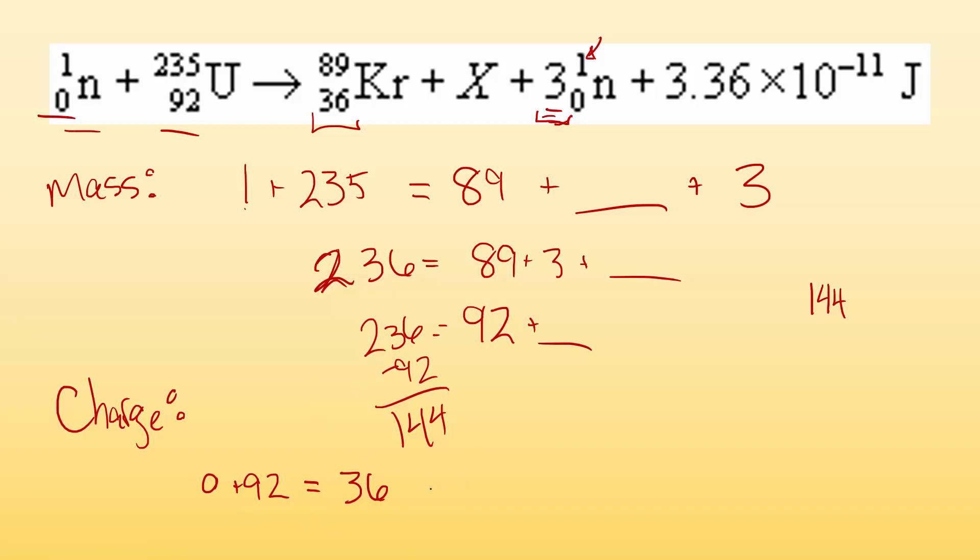So 92 has to equal 36 and some number. So I do 92 minus 36, and I end up with 56. So with an atomic number of 56, what element is that? Look it up on my periodic table, and it's barium. So there you go. That is the missing thing. That is X.